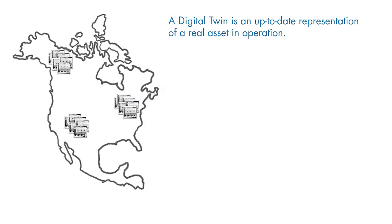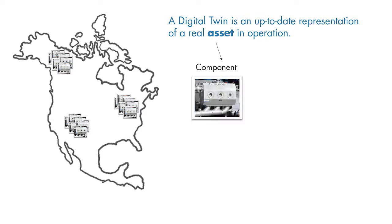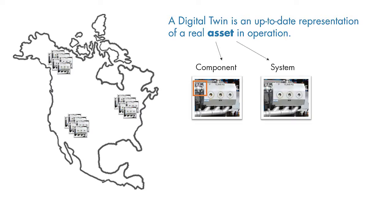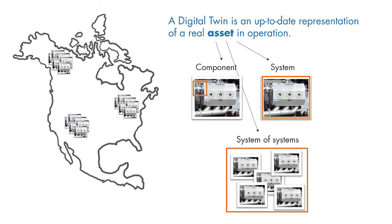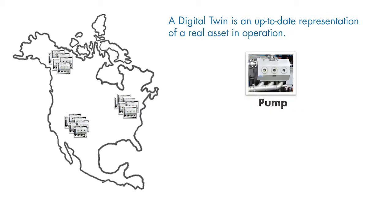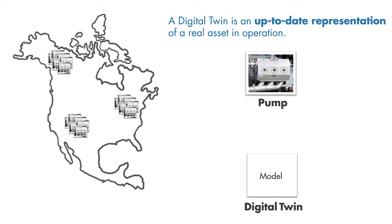What we refer to as an asset in the definition of the digital twin may be a component of a system, such as the valve of the pump, or it can be a system — the pump itself — or it can be a system of systems, which would be the well site with multiple pumps. Here, we'll assume that our asset is the pump. An up-to-date representation of the pump can be achieved by creating a model which is updated with incoming data from the pump to represent its current state.